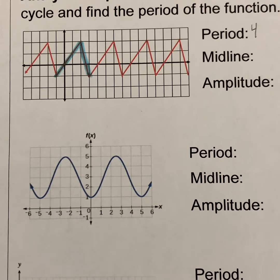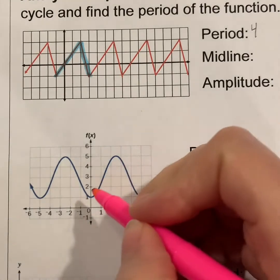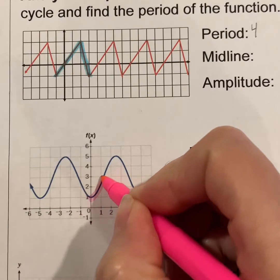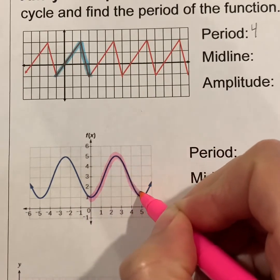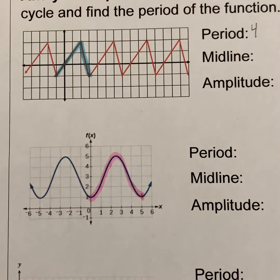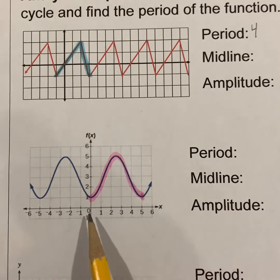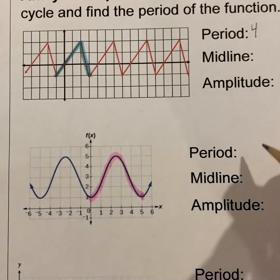This next periodic function is probably something you've seen before. Depending on how you view the cycle, I'm looking at it as: we start here at the bottom, go up, and then back down again — so in my eyes, that would be one cycle. The period of this cycle: if it starts at zero and ends at five, that means the period is five.